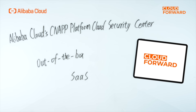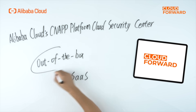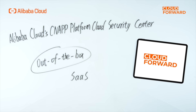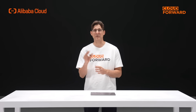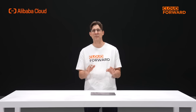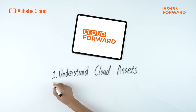Afterward, the customer started using Alibaba Cloud's CNAPP Platform Cloud Security Center, an out-of-the-box SaaS product that is deployed upon activation and offers unified detection and protection for enterprise hosts, containers, and cloud products.